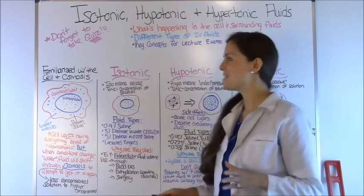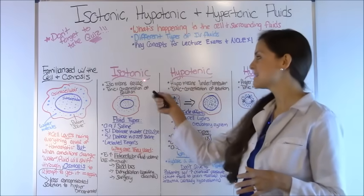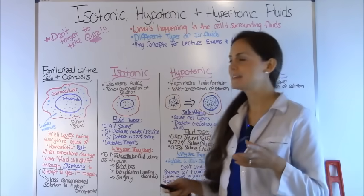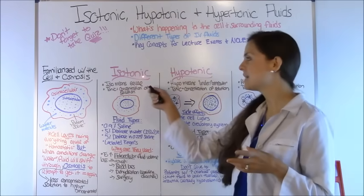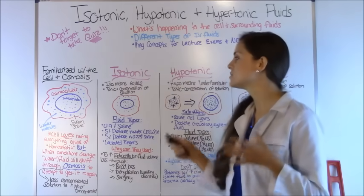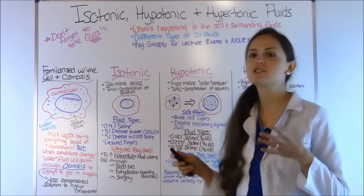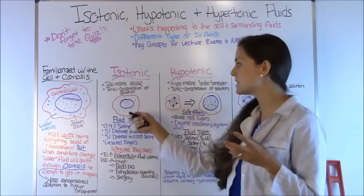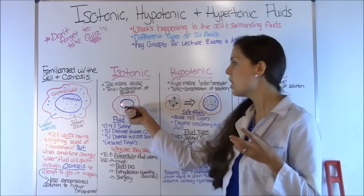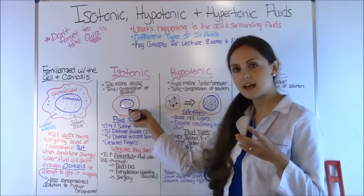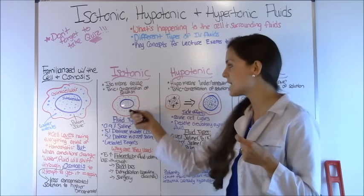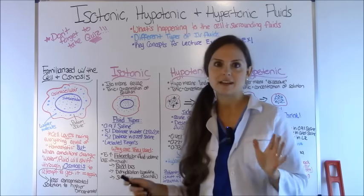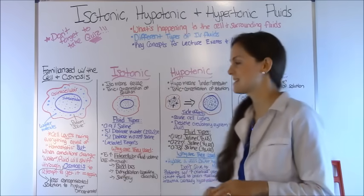First let's go over isotonic. ISO means equal, and tonic means concentration of the solution. So there is an equal concentration on the inside of the cell and on the outside of the cell. The body is happy — it loves having it like this.